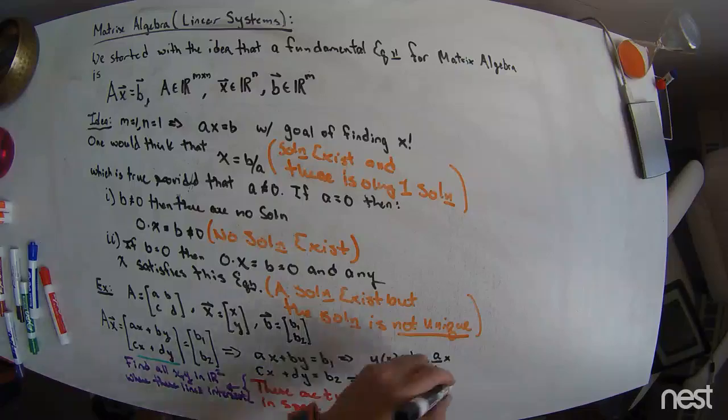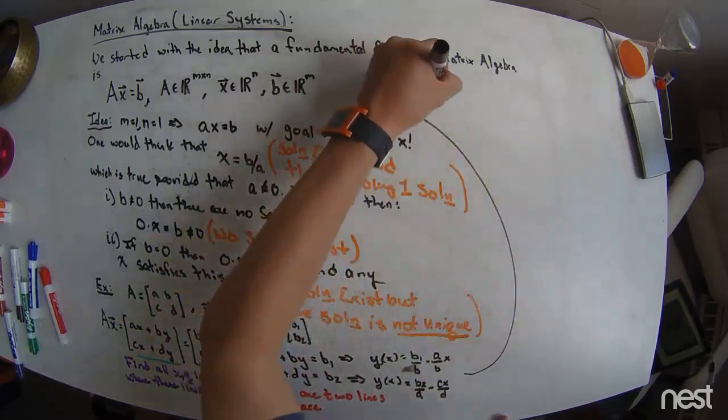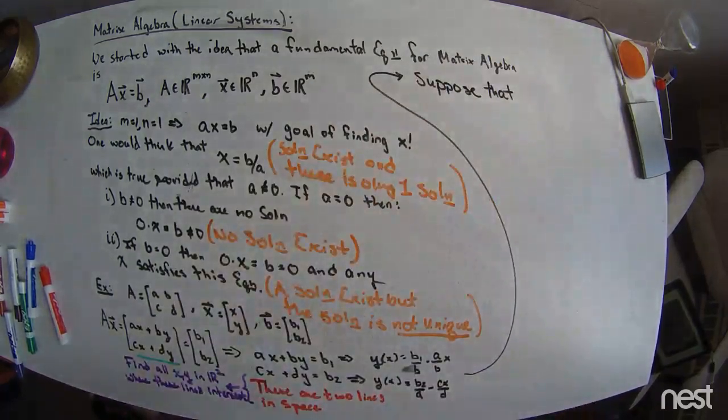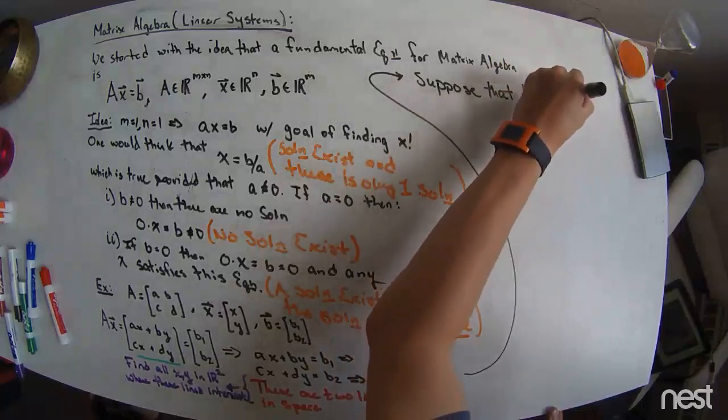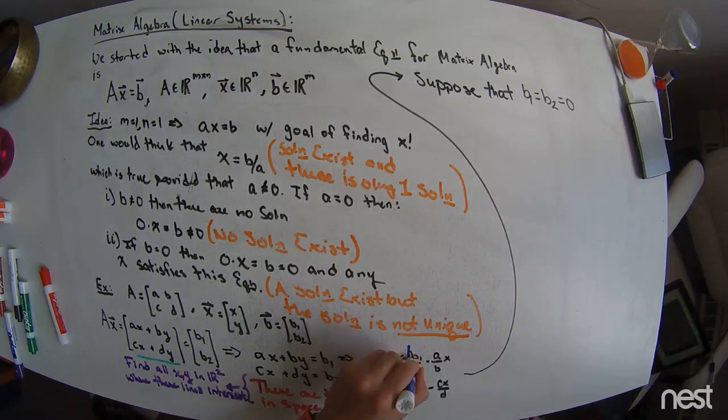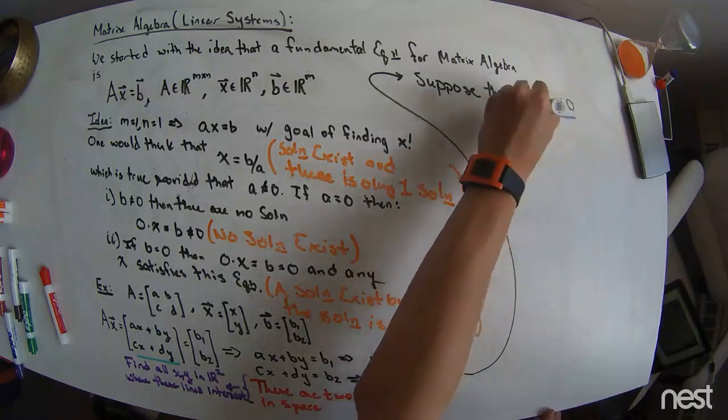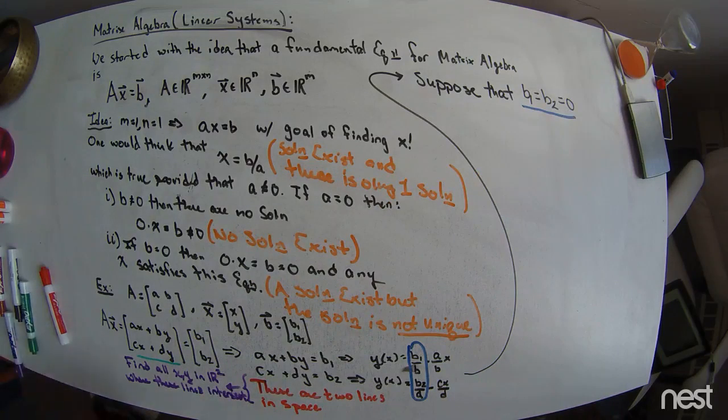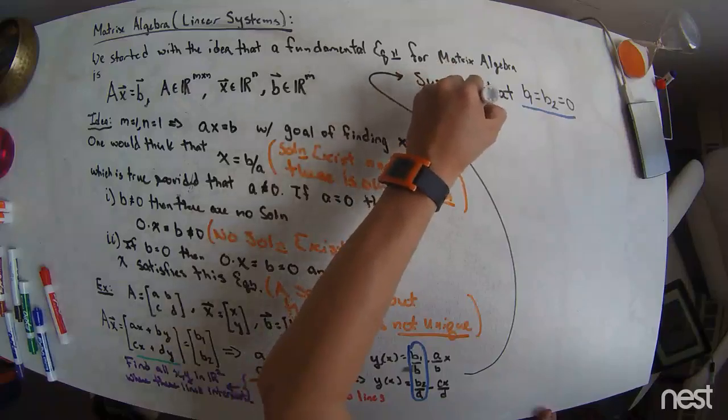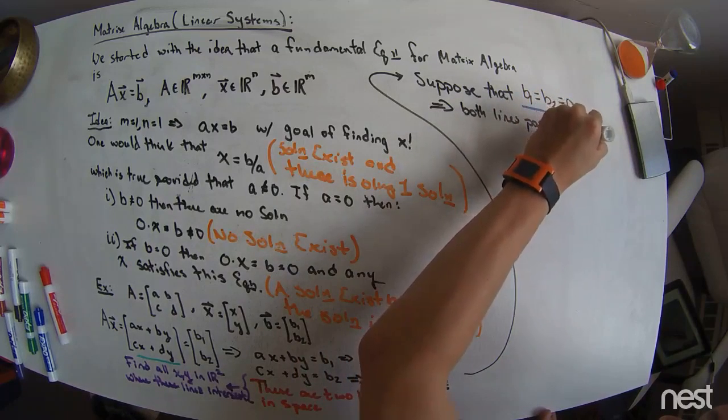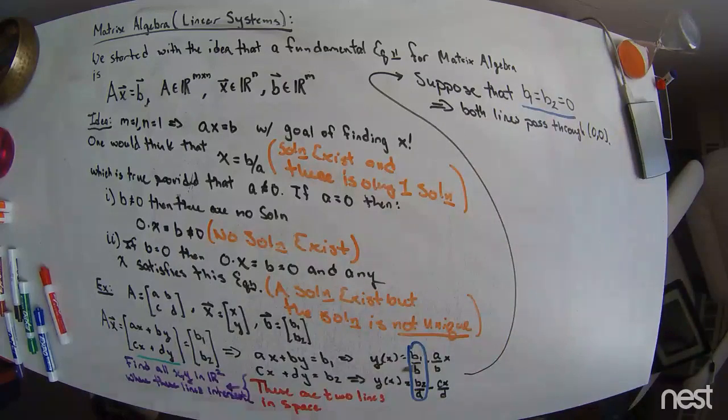To make our life easier, let's go up here really quick. Suppose that b1 equals b2, which equals 0. So what that would do for each of the lines, we see it right here, is that those components would go away. Well, what those components mean geometrically is the y-intercept. So what we demand now is the implication here is that both lines pass through (0, 0). So they're guaranteed to intersect. They're both going through the origin of the coordinate system.